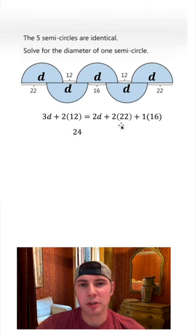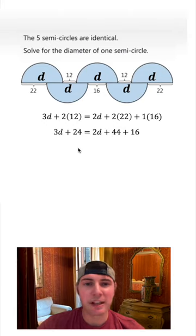Well, double 12 is 24 and double 22 is 44, and then we can bring down everything else. Let's combine like terms. The 44 and the 16 give us 60 and bring down everything else.